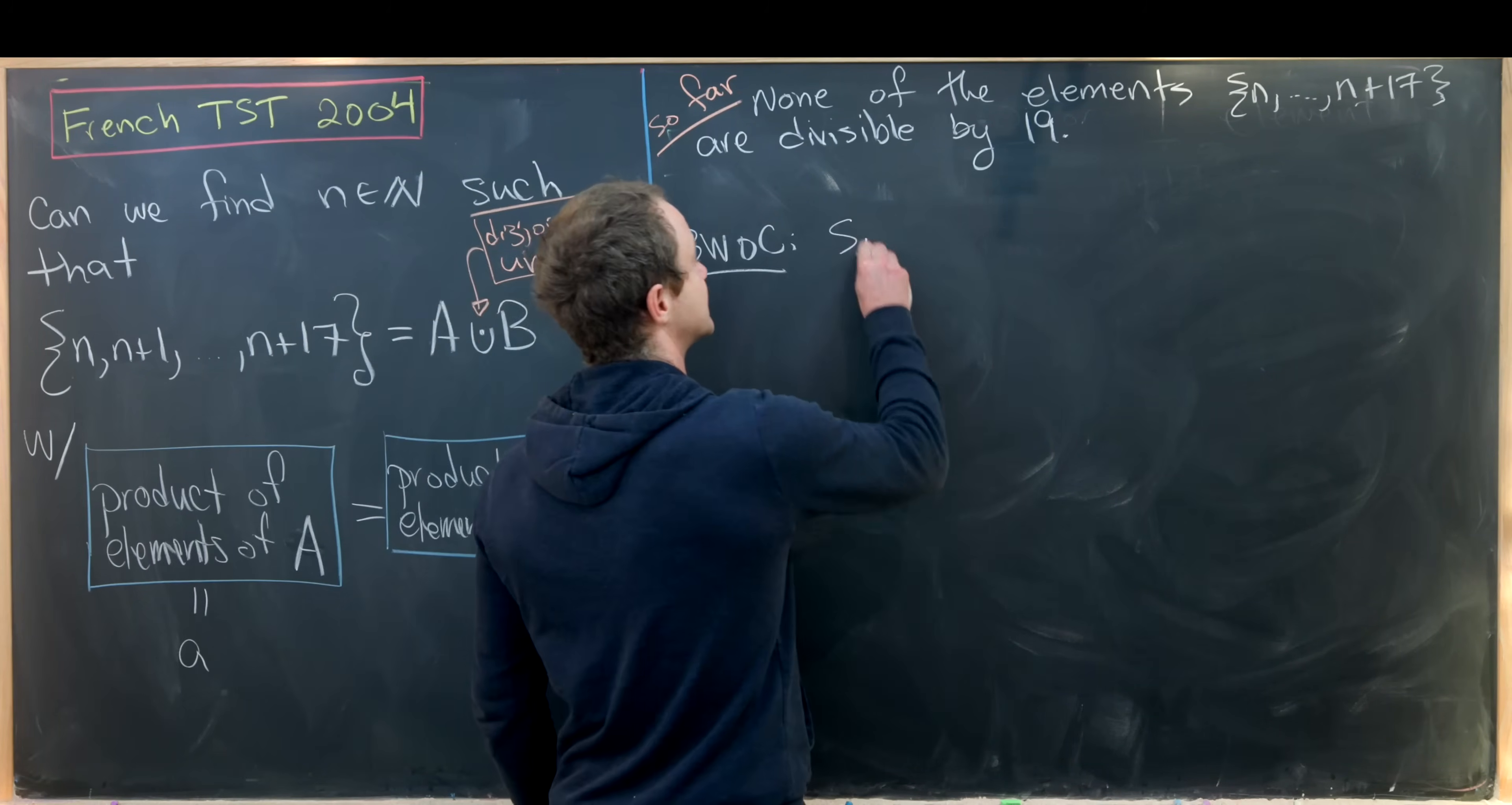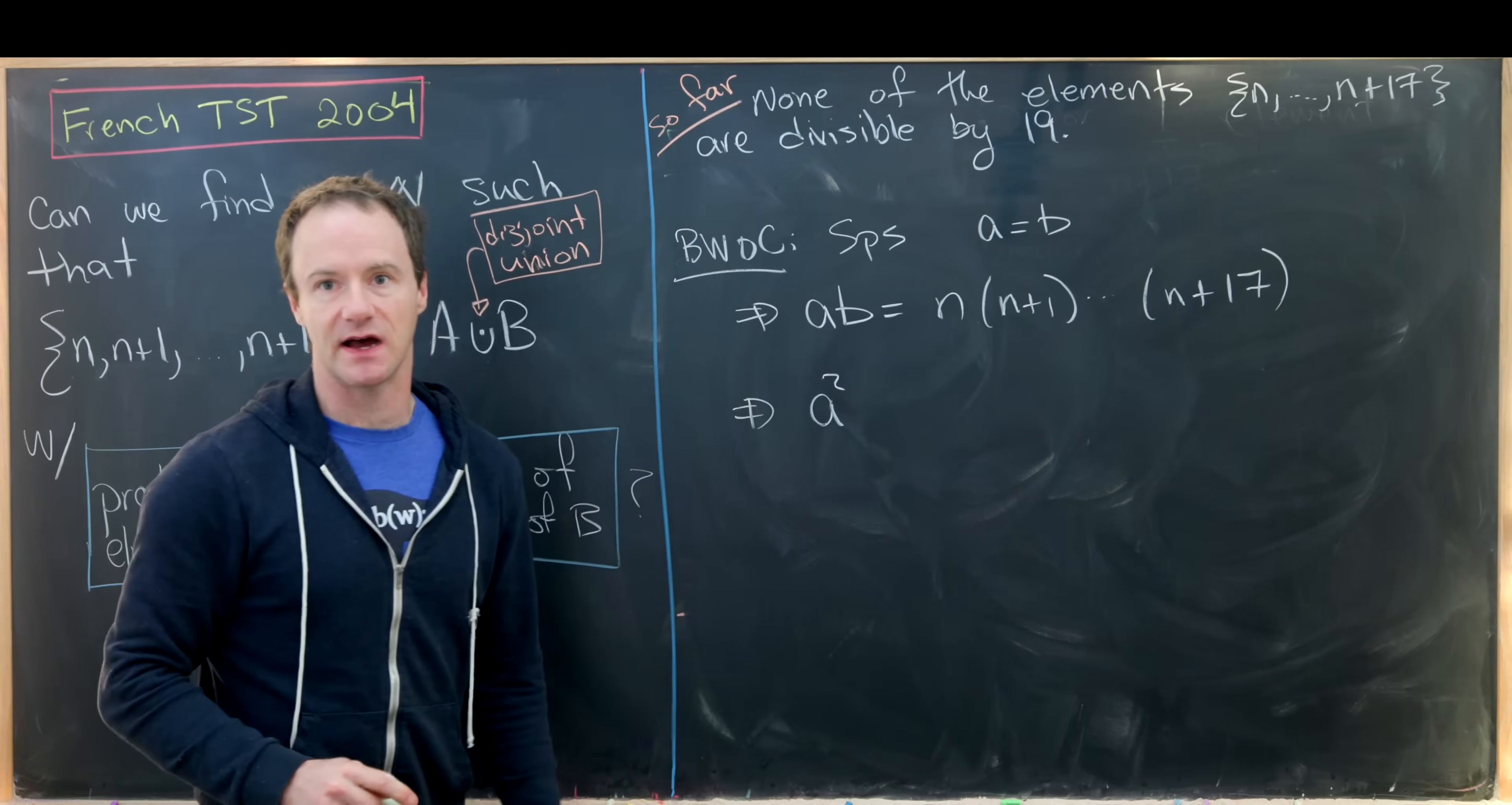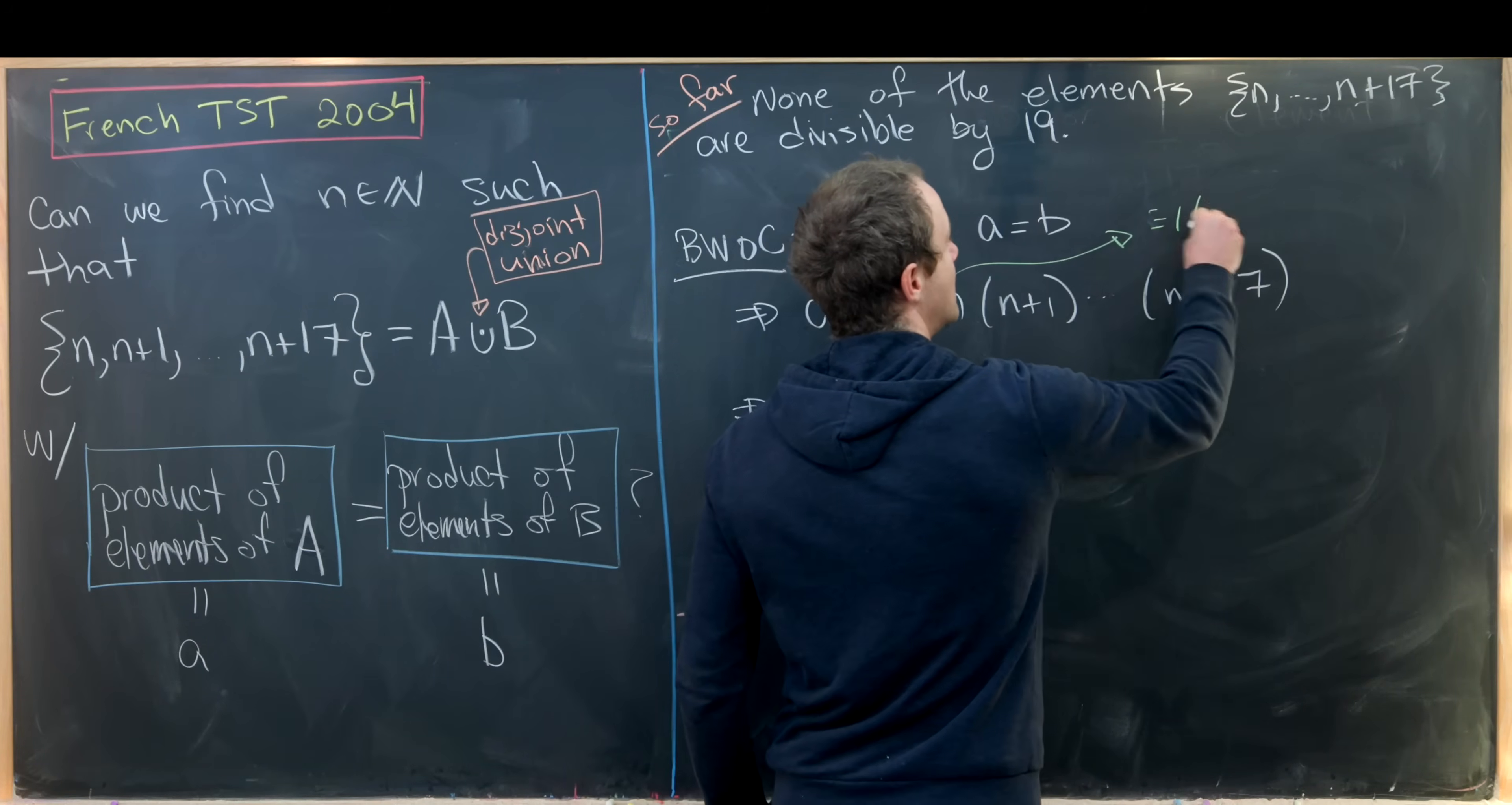By way of contradiction, we will suppose that a is equal to b, but what does that mean? That means that a times b is the same thing as n times (n+1), all the way up to (n+17). Now let's reduce this all mod 19. Well, first of all, since a is equal to b, we can say that we have a² on the left hand side. And notice we get this product of all of these numbers because these represent the product of elements from these two disjoint sets, which union to this thing right here. So we've got a² over here because a is equal to b. And then over here, we have 1 times 2 times 3, all the way up to 18. You might say, how do we know that?